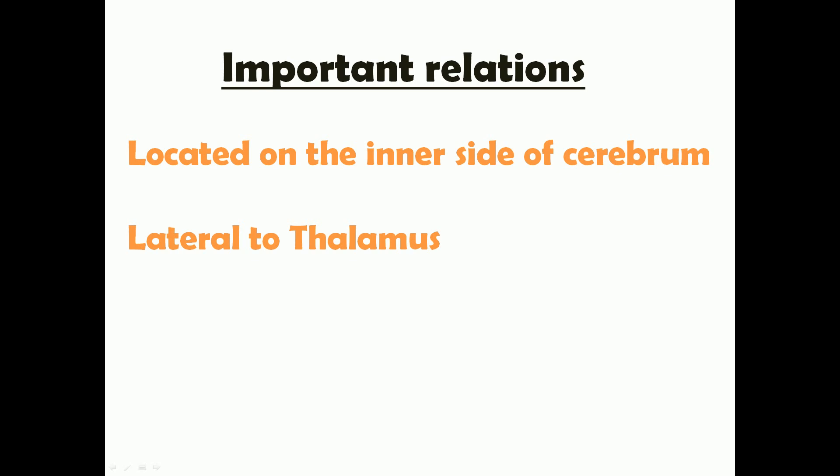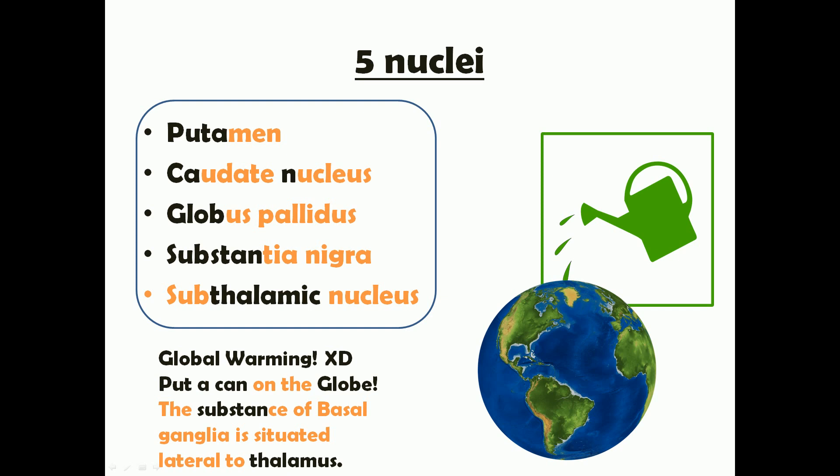The basal ganglia basically includes five nuclei, and you need to know and remember all five. The five nuclei are: putamen, caudate nucleus, globus pallidus, substantia nigra, and subthalamic nucleus. Each one of these nuclei is individually important in different functions.